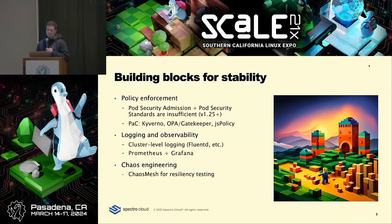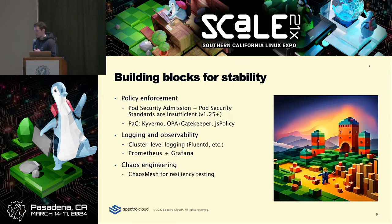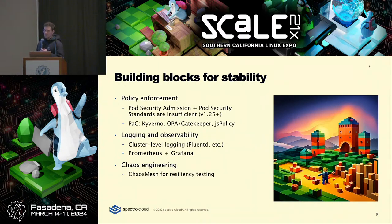Logging and observability: everyone knows about Prometheus and Grafana. You need cluster-level logging as mentioned earlier. Fluentd is an open source project that does a great job with the sidecar model, basically uploading all the metrics for all your pods to a central location for querying. If you don't know what's happening when pods are dying or things are crashing, you won't be able to debug anything. That's mandatory in production.